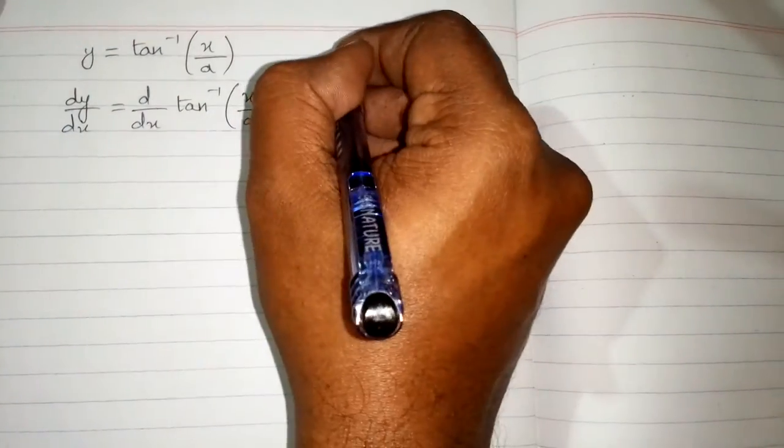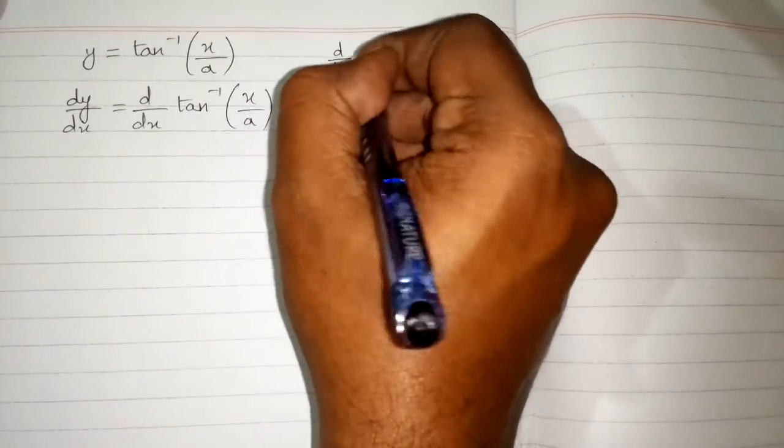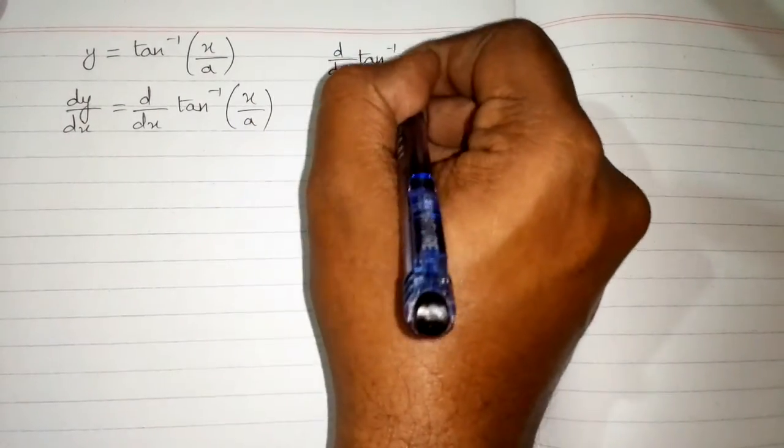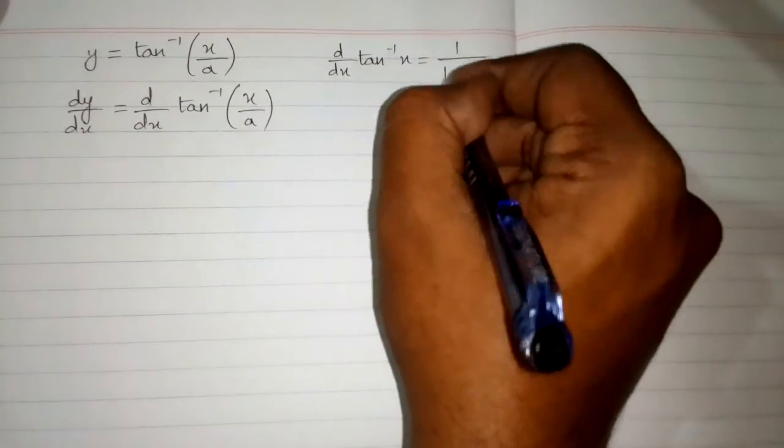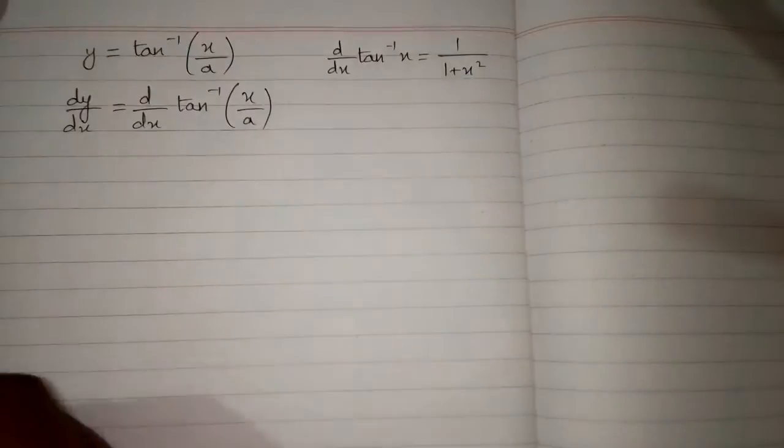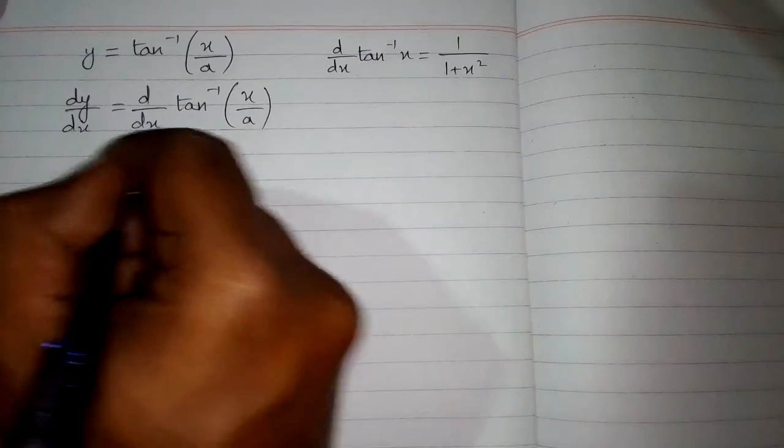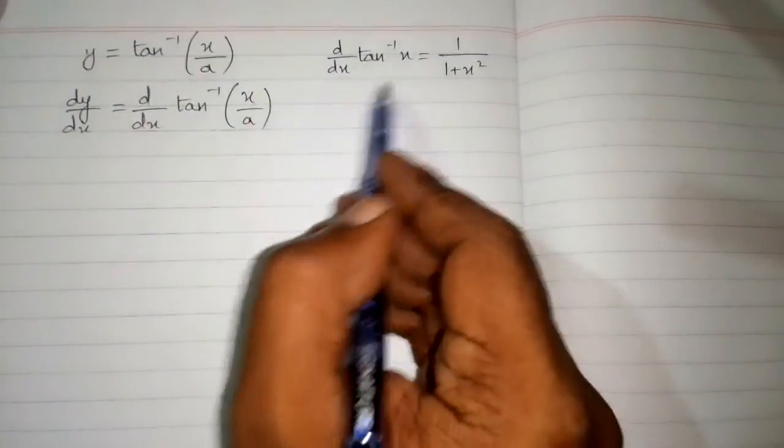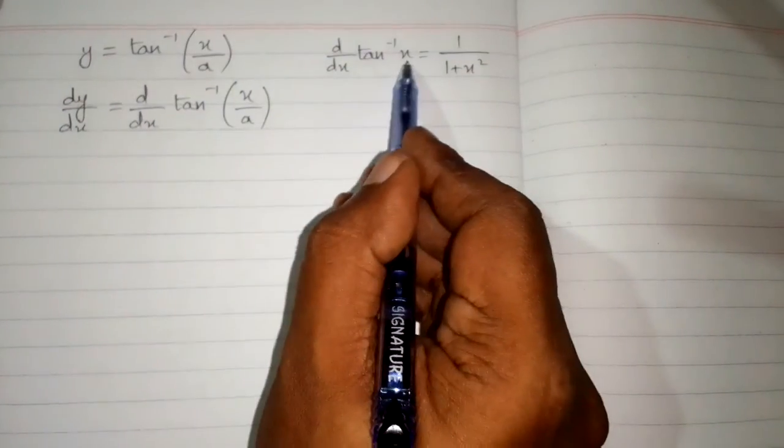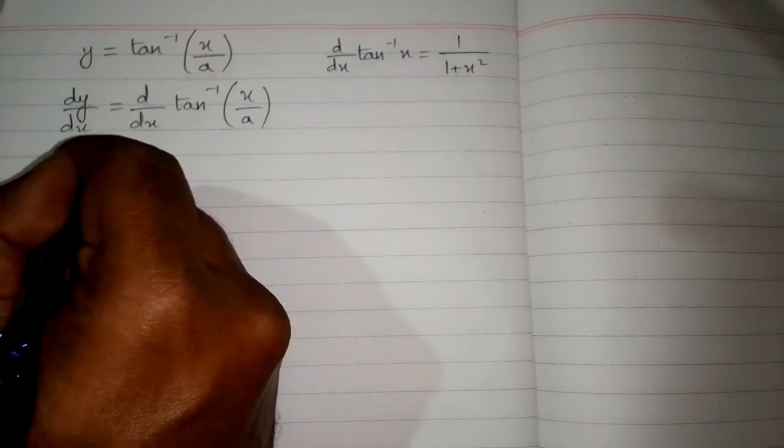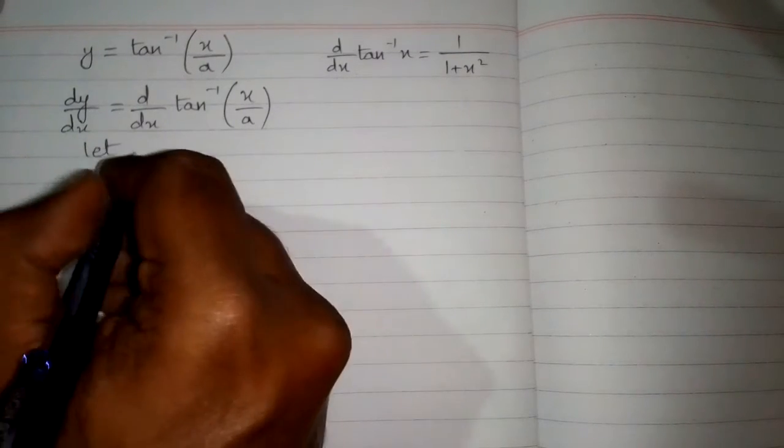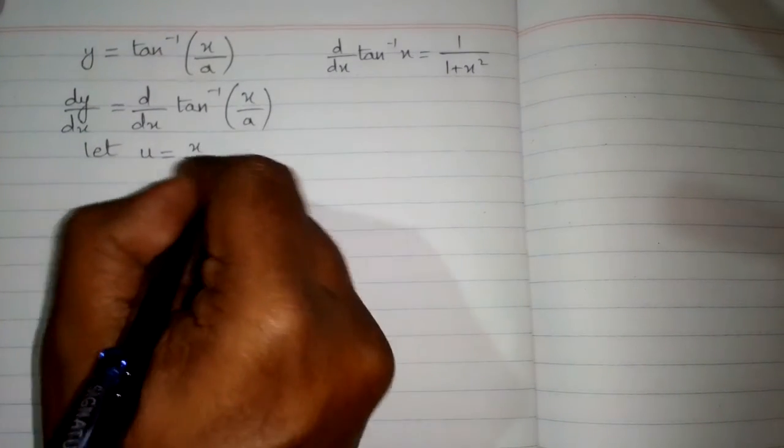Now we know that the derivative of inverse tangent of x is 1 upon 1 plus x square. So here we have x upon a in place of this x. So we will suppose that u equals x upon a.